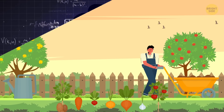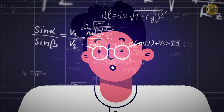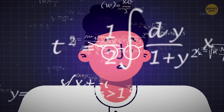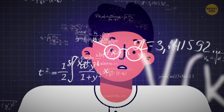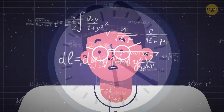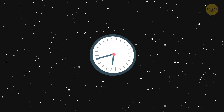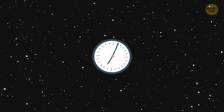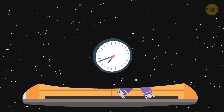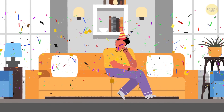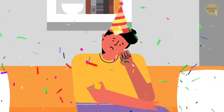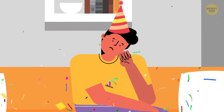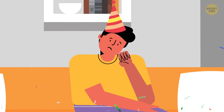Modern mathematics, geometry, physics, and other exact sciences would disappear. In fact, we wouldn't be able to measure time itself. There would be no dates or years. You wouldn't even be able to celebrate your birthday or know how old you are.